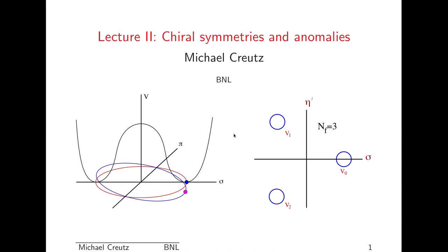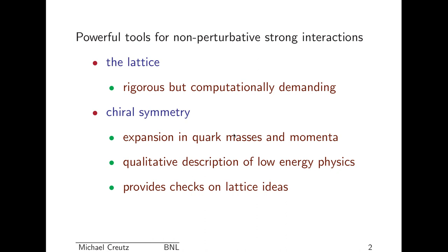By the end of this lecture you should know what these pictures here are at the beginning. So there are two powerful tools for non-perturbative strong interactions. One of course is the lattice, which is the main thing of this school. It's very rigorous, a way of defining the field theory, but extremely computationally demanding. The other tool we've had for a long time is chiral symmetry. This is an expansion in the quark masses and momenta, and it gives a very nice qualitative description of a lot of low energy physics. But because it is a symmetry of the theory, it provides some very nice checks on the lattice ideas.